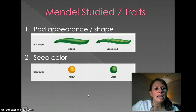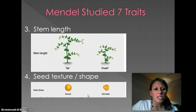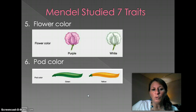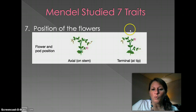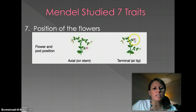Here are the seven traits. He looked at how the pod looked — was it inflated or constricted? The color of the seed, yellow versus green. Was it a tall plant or a short plant? Was the seed round, or did it look wrinkled and shriveled up? Were the flowers purple or white? Were the pods green versus yellow? And finally, the position of the flower — was it axial on the stem, or was it at the tip of the stem, which is called terminal?